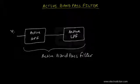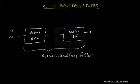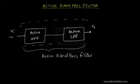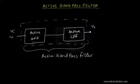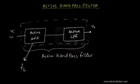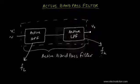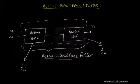We're going to apply the input signal VI, which will obviously be an AC signal at the input, and from this terminal we'll take the output. This entire circuit within the dotted lines serves as our active bandpass filter. An active high pass filter has a frequency known as the lower cutoff frequency, and the active low pass filter has a frequency known as the upper cutoff frequency, denoted FH.